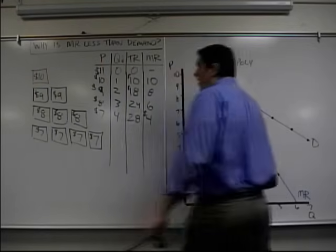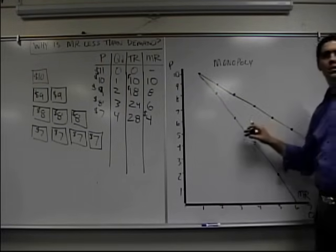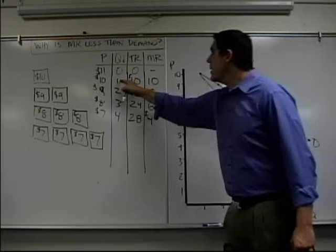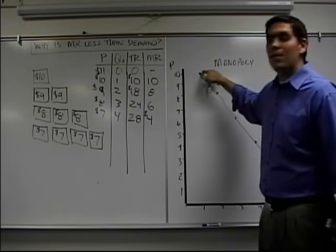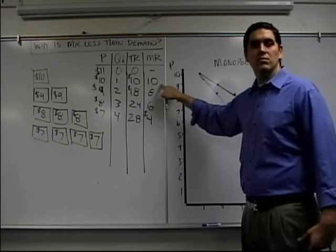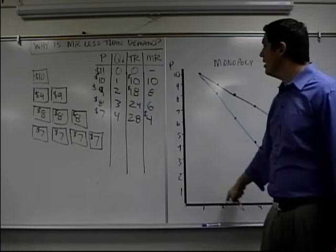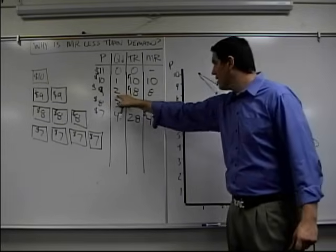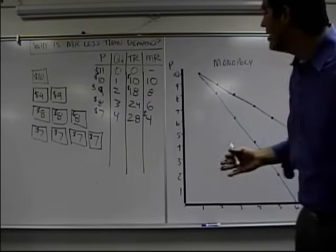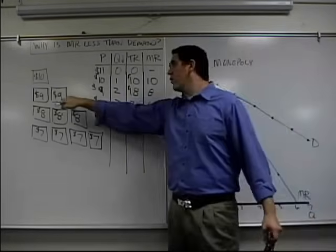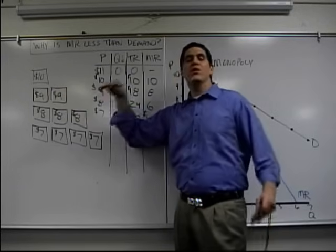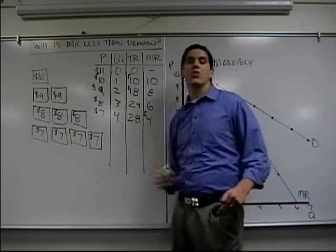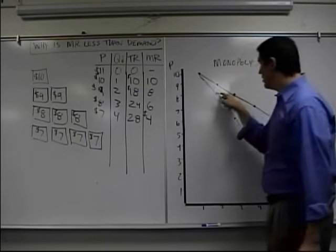That's how I got this graph. This graph is those numbers plotted. Take a look. For this first unit, people are willing to pay $10. That's the demand. The marginal revenue equals to it. All right. That makes sense. For the second unit, people are willing to pay $9. $9 for the second unit, but the marginal revenue is not $9. It's $8. Again, it's because I sold the one unit for $9, minus $1 for the product I would have sold at a higher price. So it's right there. It's $8.